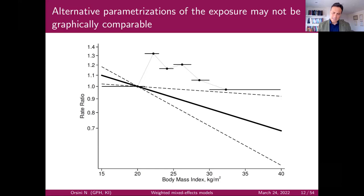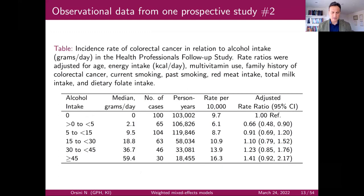There are some challenges here. Another example: alcohol intake and colorectal cancer. You get a table of measures of effect compared to never drinkers, with the median alcohol intake within each category, and then you regress Y on X.